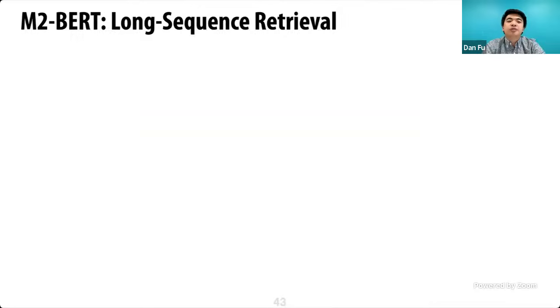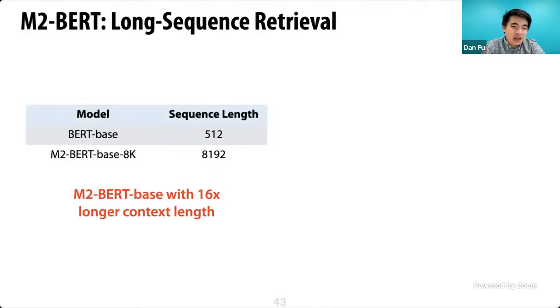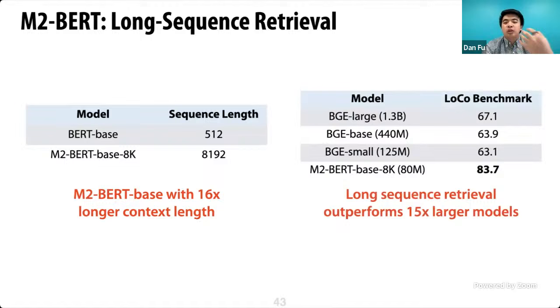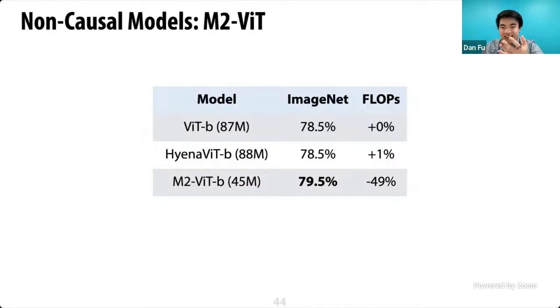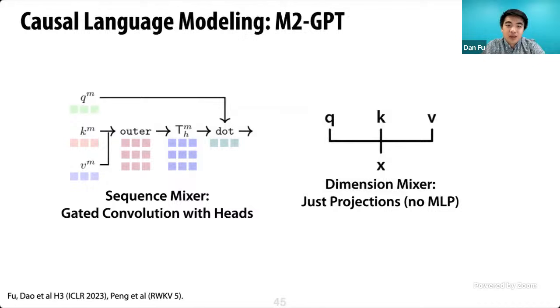We've started using M2 BERT for long-sequence retrieval, training long-context BERT models up to 8K, with a 32K retrieval model in the works. This allows long-sequence retrieval much better than transformer-based models, showing large performance improvements over models with 15x more parameters — scaling in sequence length means you can use a much smaller model. For vision transformers, M2 can match and outperform vision transformer performance with up to half the FLOPs and parameters.